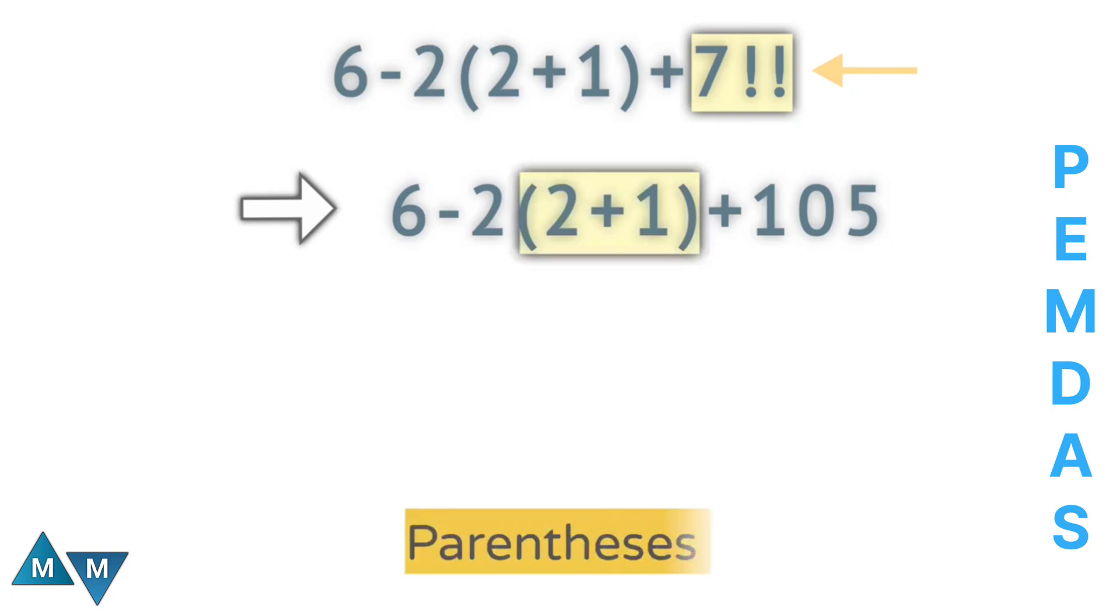So the first thing we're going to do is parentheses. So 2 plus 1 will be our first move, which equals 3.